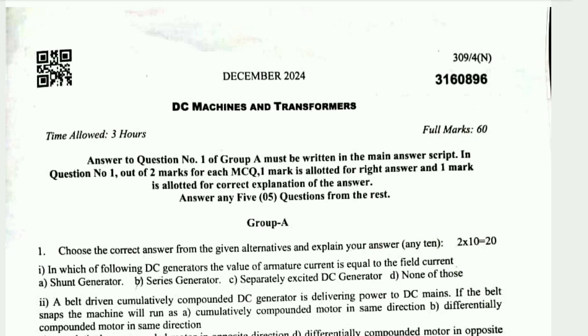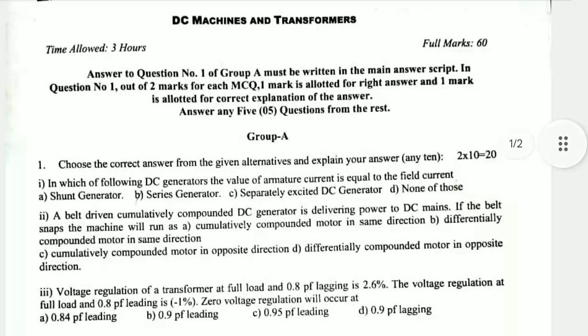Question 1: In which of the following DC generators is the value of the armature current equal to the field current? Options are: Shunt generator, Series generator, or Separately excited DC generator. The answer is B — Series generator — because in a series generator, the armature current and field current are the same.